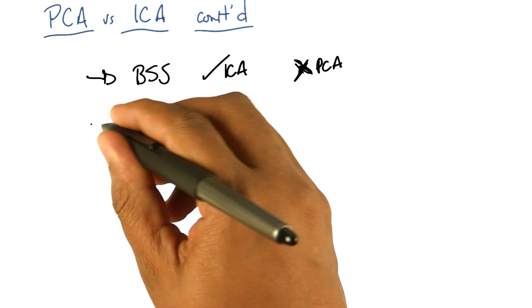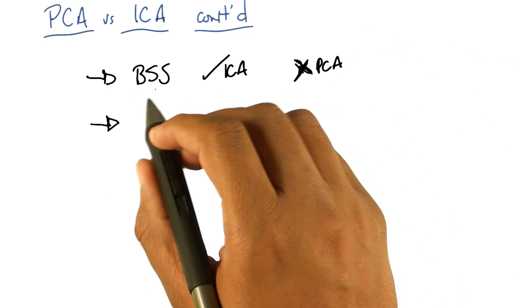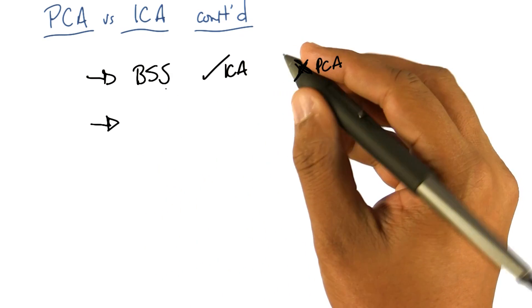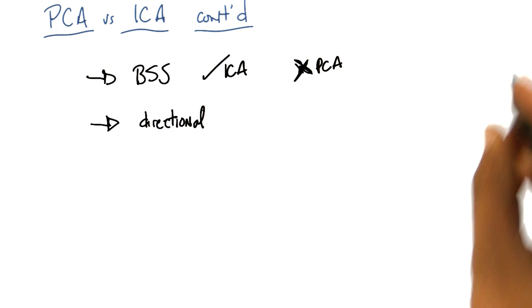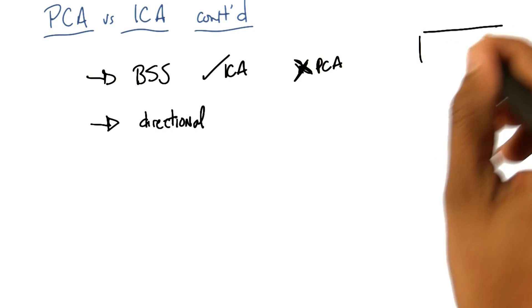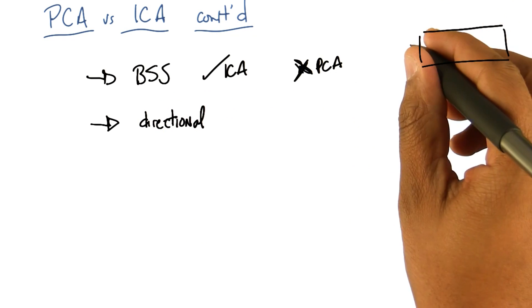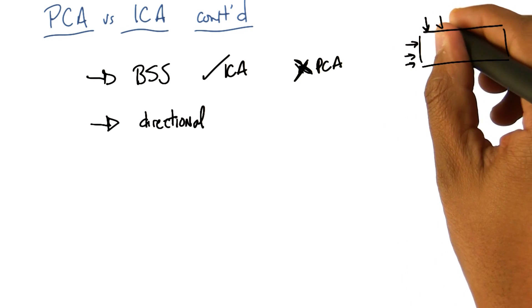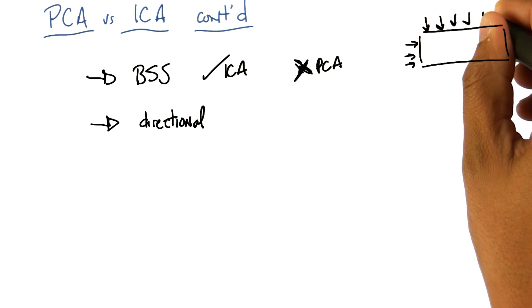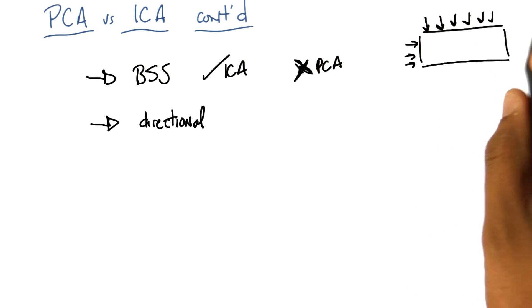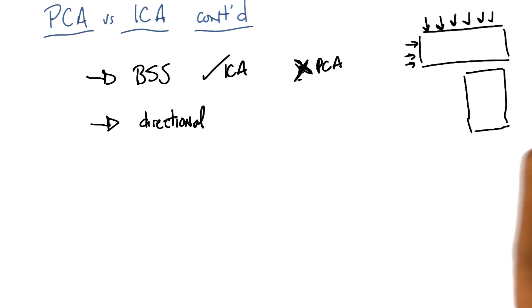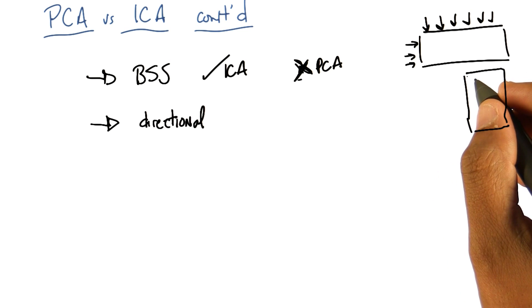But here's something that ICA does differently from PCA - because it's got this kind of blind source root in it, it's actually directional. You recall I drew this sort of matrix before, where we had features this way and we had samples of those features, like time samples of sound, this way. It turns out that for PCA, it doesn't matter whether I give you this matrix or the transpose of this matrix, it ends up finding the same answer.